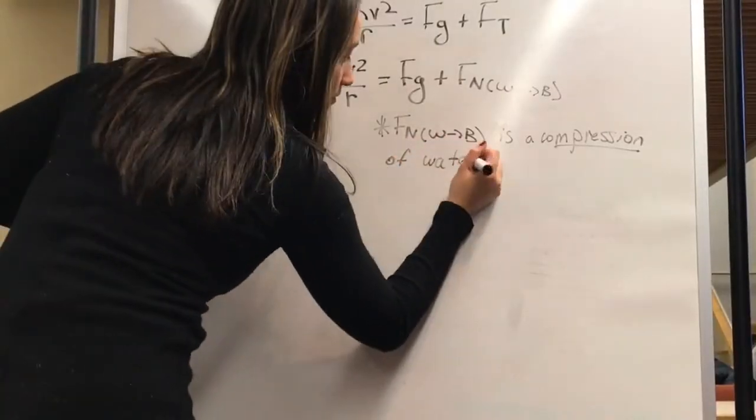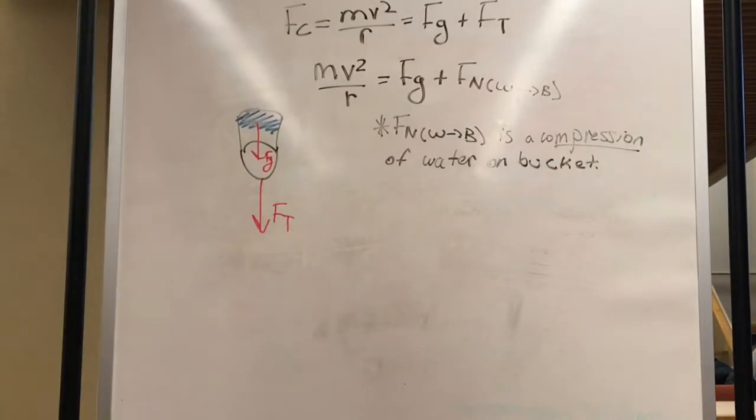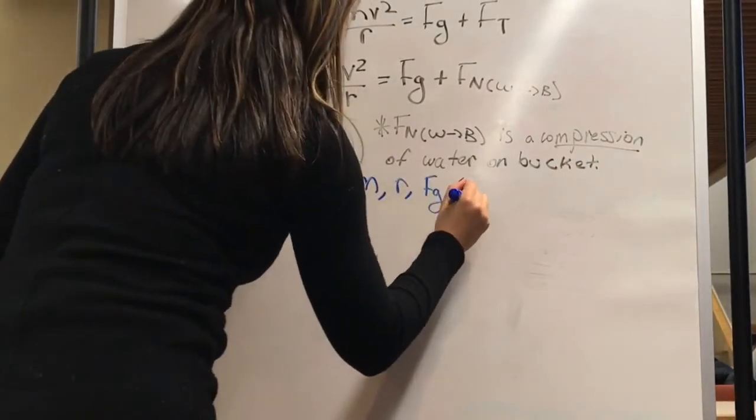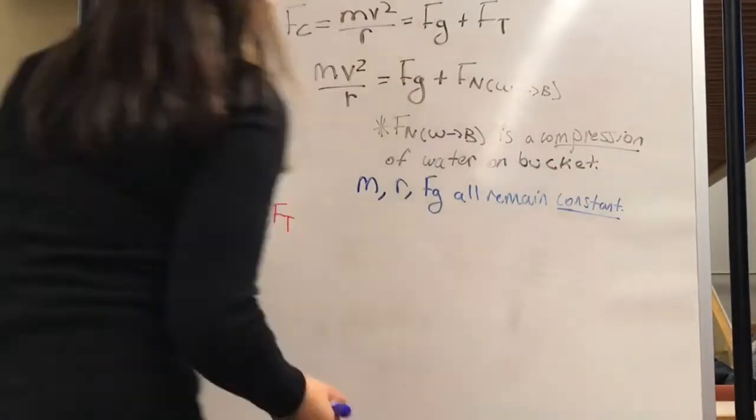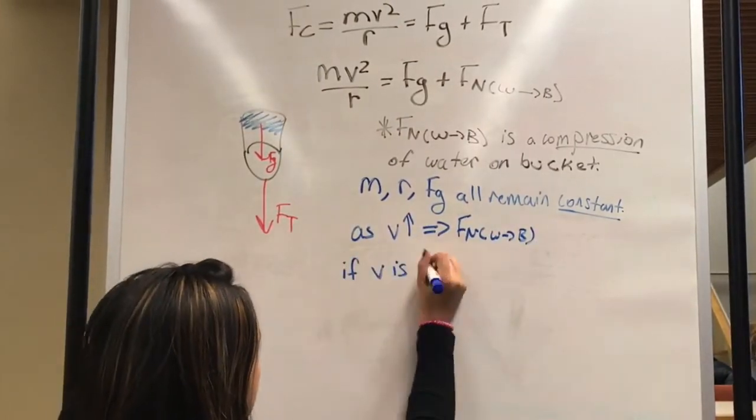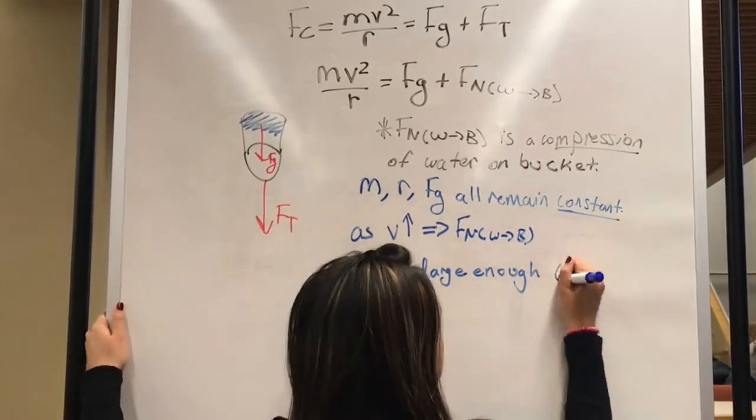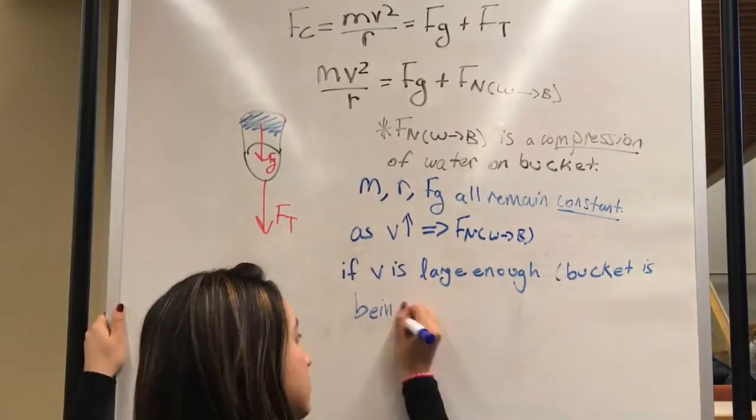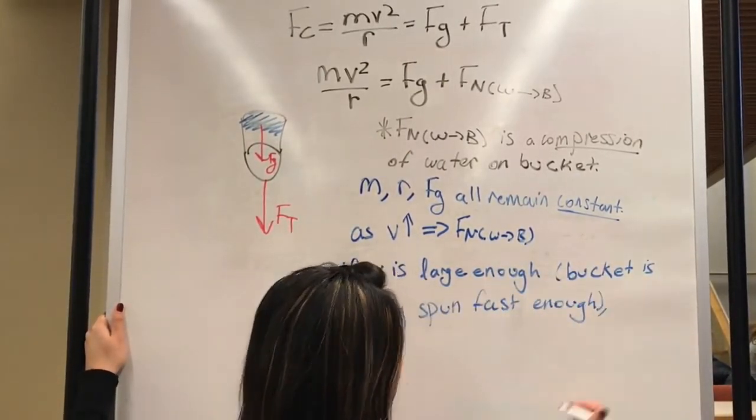The normal force of the bucket on the water is equal to the force of the water on the bucket. Thus, the water is being compressed into the bucket. Because the mass, the radius, and the force of gravity all remain constant using our first equation, you can see that as the velocity increases, the normal force of the water on the bucket also increases.